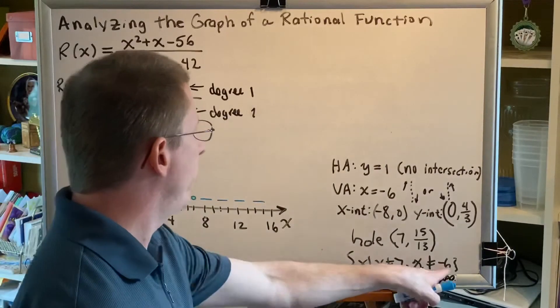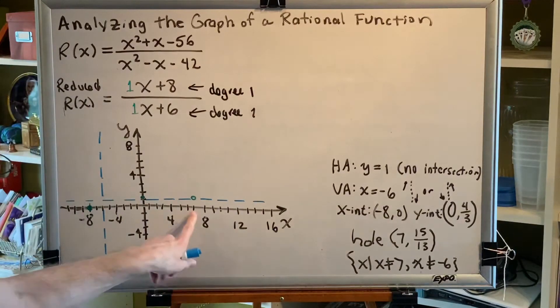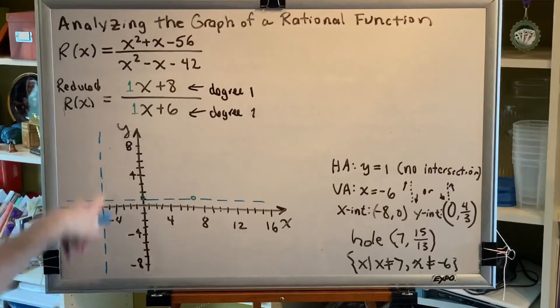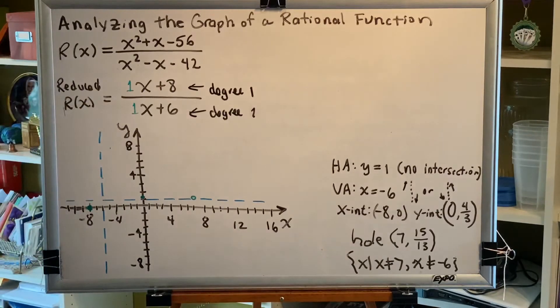And our domain is x is not allowed to be 7 or negative 6. Notice that at 7 we have a hole, and at negative 6 we have a vertical asymptote. So that is consistent with what we observed here.